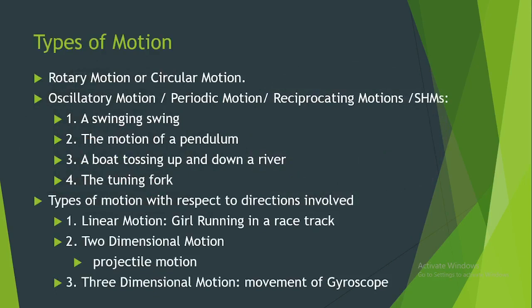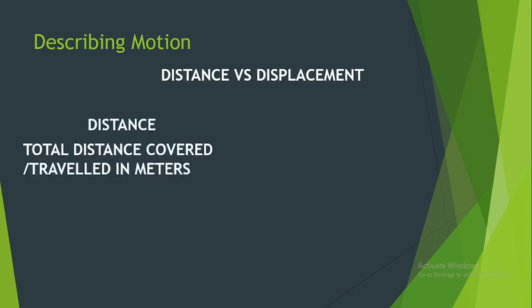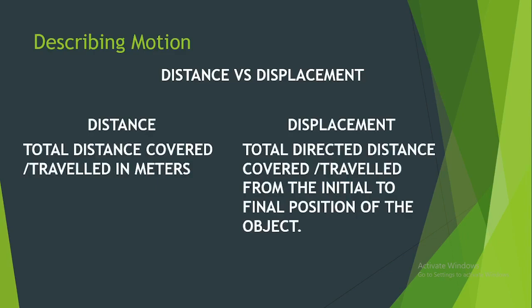We can start describing motion using the elements involved in motion. First, we try to differentiate distance from displacement. Distance is defined as the total distance covered, while displacement is the total directed distance covered or traveled from the initial to final position. Distance is a scalar quantity while displacement is a vector quantity.